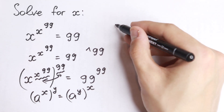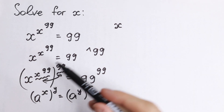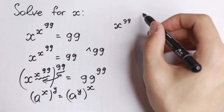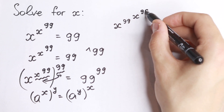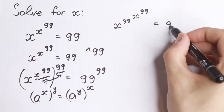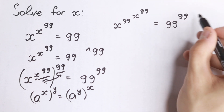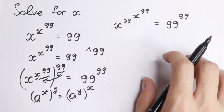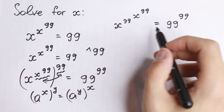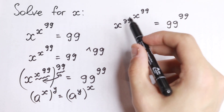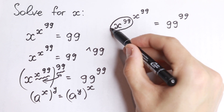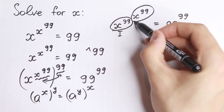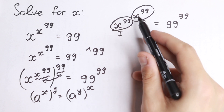Let's apply this rule. We will have x to the power 99, raised to the power x to the power 99, equal to 99 to the power 99. As you can see, there are a lot of 99s on the left side, but we have a good trick. Take a look — right here we have a base, which is x to the power 99, and this is our exponent, also x to the power 99.